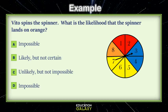Let's look at this example. Vito spins a spinner. What is the likelihood that the spinner lands on orange? Is it impossible? No way. Our spinner just did it.